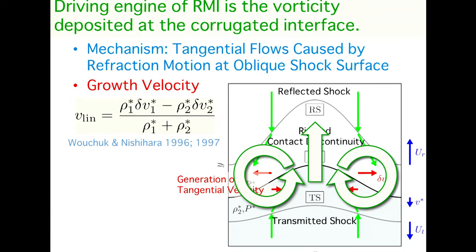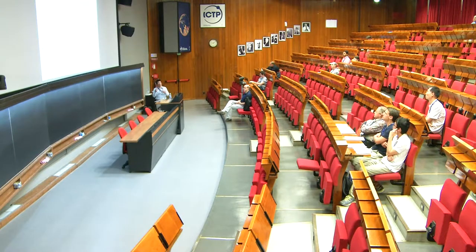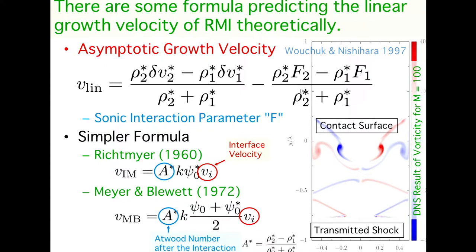The linear growth velocity is strongly coupled with these tangential velocities. The Richtmyer-Meshkov instability has linear growth with time, not exponential. It occurs without gravity and is unstable for both light-to-heavy and heavy-to-light configurations. There are formulas predicting the linear growth rate. In this talk, we adopt the Volchok-Nishihara formula given by this equation.